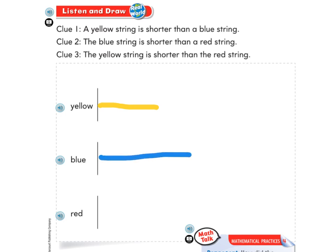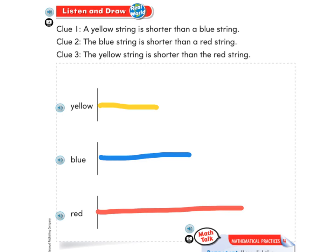We know we have a red string too, but we don't know any information about it yet. So let's read the next clue. Clue two: the blue string is shorter than a red string. So go ahead and draw a red string right now. Your red string should look something like that.